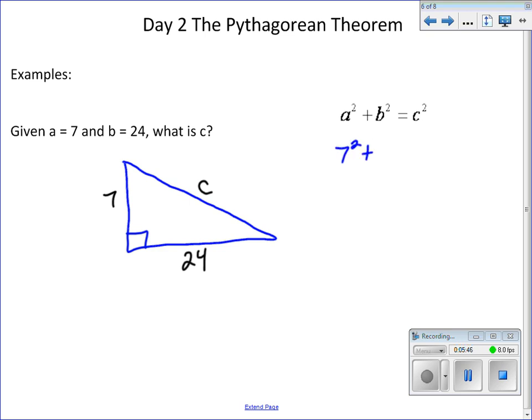Plug in 7 squared plus 24 squared, because that's what B is, and that will equal C squared. 7 times 7 is 49. 24 squared, or 24 times 24, gives us 576, and that equals C squared.